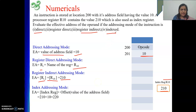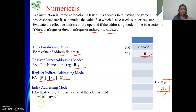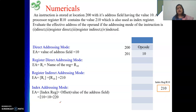Next is index addressing mode. In index addressing mode, the effective address equals the index register content plus offset. The index register R10 has value 210, and the offset is the content of the address field, which is 10. So 210 plus 10 gives 220. This is a very easy numerical — we just need to know the addressing modes and apply the values.